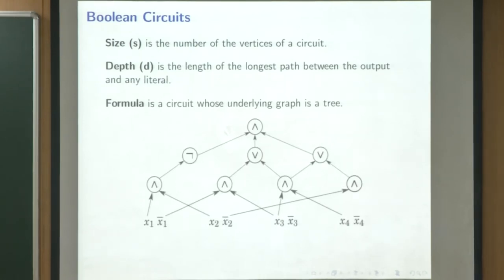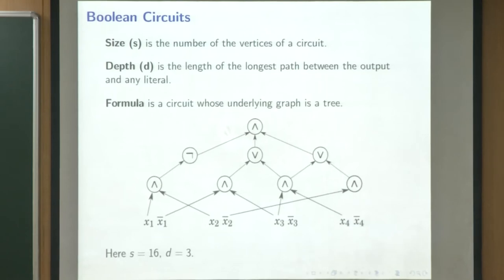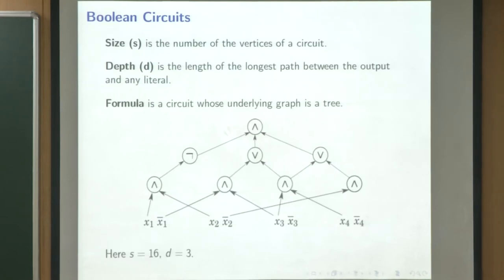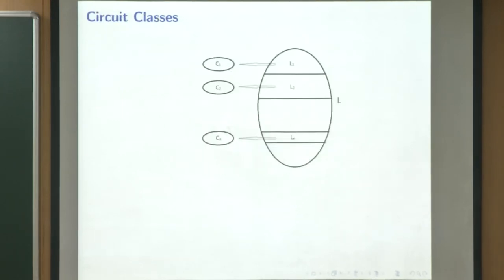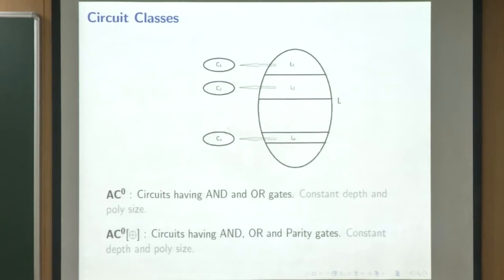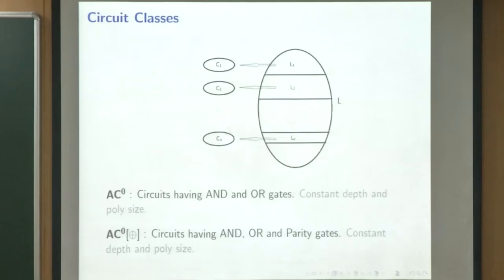A formula is a special circuit where the underlying graph is a tree, and size is the number of vertices. For formulas, the number of vertices and wires is more or less the same. Depth is the length of the longest output-to-literal path. If you have a family of circuits one for each size, we say it accepts a language if the circuit corresponding to inputs of size n exactly accepts words from the language of size n.